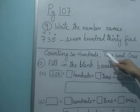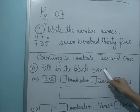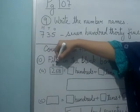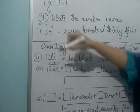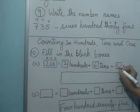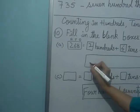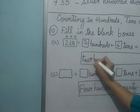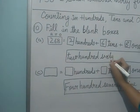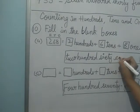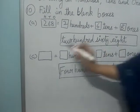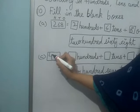Now the next is counting in 100's, 10's and 1's. Fill in the blank boxes. This number is 268. So 2 is in which place? 6 is in 10's place and 8 is in 1's place. So 2 is in 100's place. 6 in 10's and 8 in 1's. So you will write this.